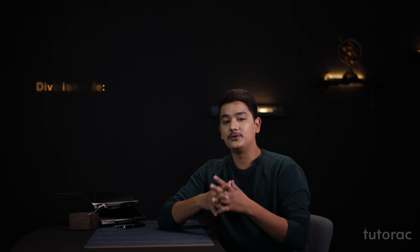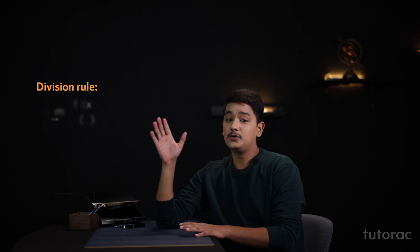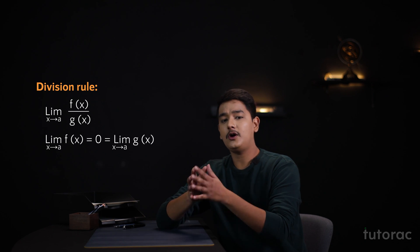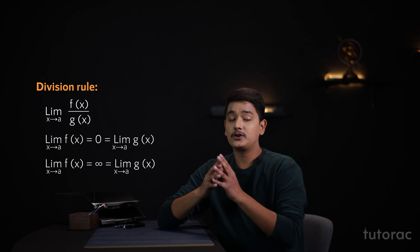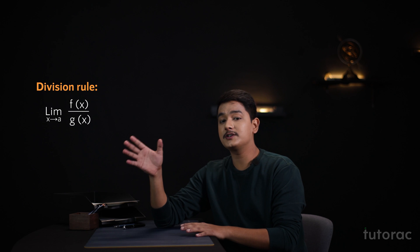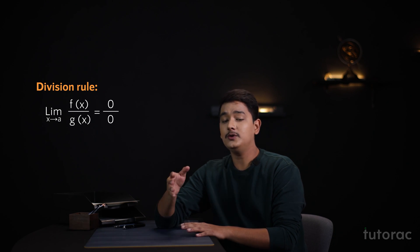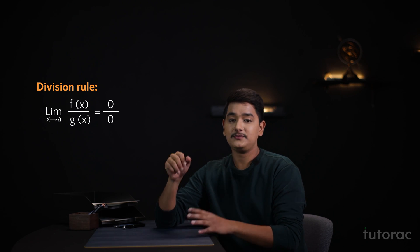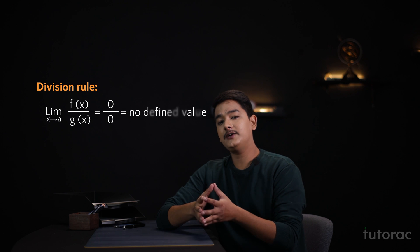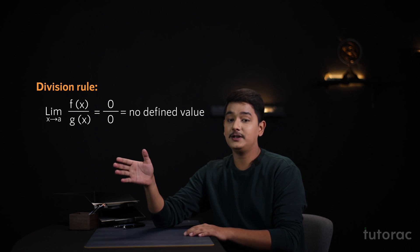Now let's talk about the division rule. Here two functions are approaching to either 0 or infinity. Let's talk about the first case where both the functions are approaching to 0. We will get 0 by 0 and we cannot get any defined value for the expression 0 by 0.